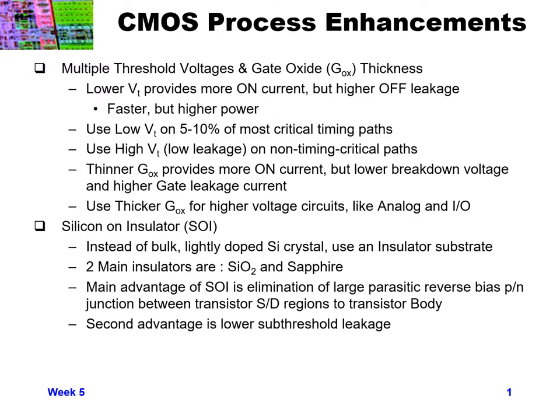Similarly, using a thinner gate oxide can provide more on current in a similar way as a lower VT, but it has a lower breakdown voltage and a higher gate leakage current. So you might use a thicker gate oxide for circuits that require higher voltage, such as your analog and IO circuits, and use a thinner oxide in your digital circuits.